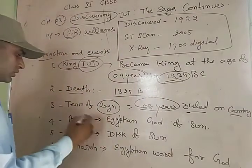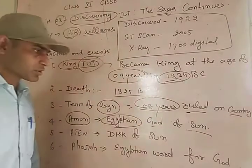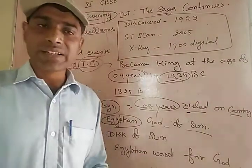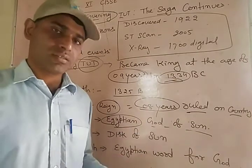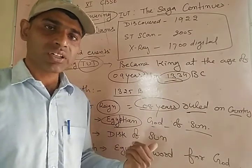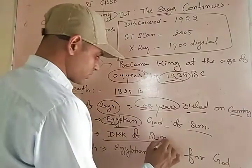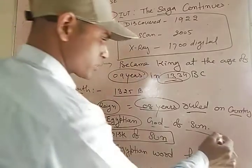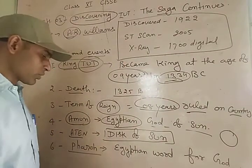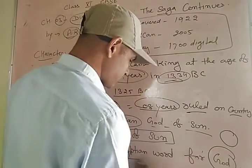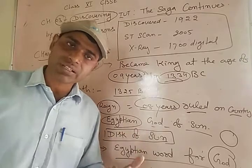Next important term is 'Amon.' Amon is the Egyptian god of the sun — a very respected, single god in ancient Egypt. They considered the sun as their god. Next is 'Pharaoh.' Pharaoh is the Egyptian word for god. So the king could be called Pharaoh. These are important terms related to this lesson.